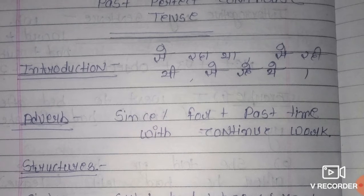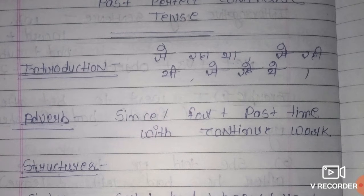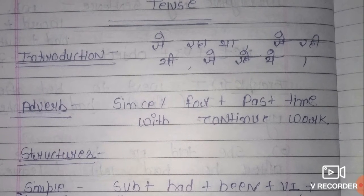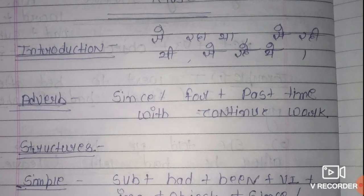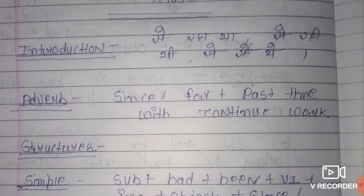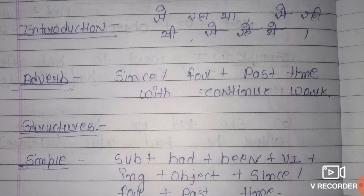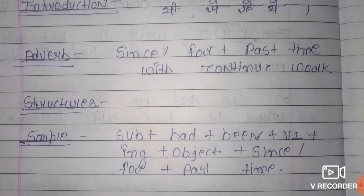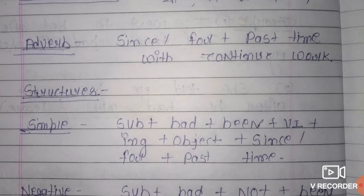Se raha tha, se rahiti, se rahiti — vaaqhi ke ant mein ye words aate hai. Inse aap easily recognize kar sakti hai ki yeh hamara kaunsa tense hai. There are some adverb clues — since or for — plus past time with continuous work. Yarni since/for ka use hota hai, or past time given hoga, or work jo hoga woh continue batayega.